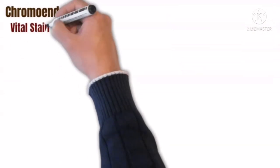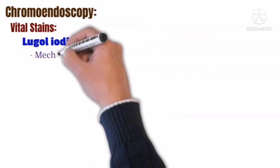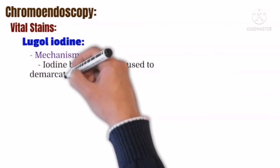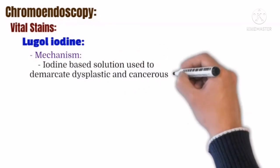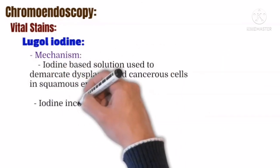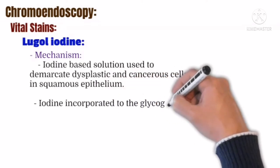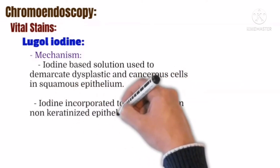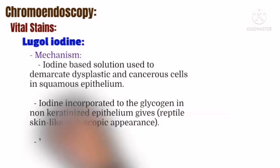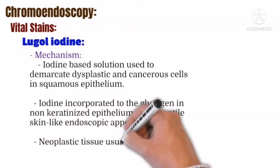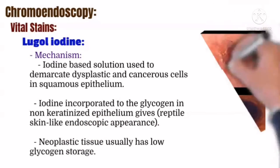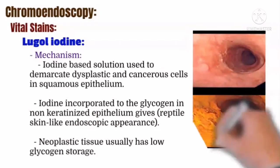The fourth vital stain is Lugol's iodine. It is an iodine-based solution used to demarcate dysplastic and cancerous cells in squamous epithelium. Iodine is incorporated into the glycogen in non-keratinized epithelium, giving a reptile skin-like endoscopic appearance. Neoplastic tissue usually has low glycogen storage.